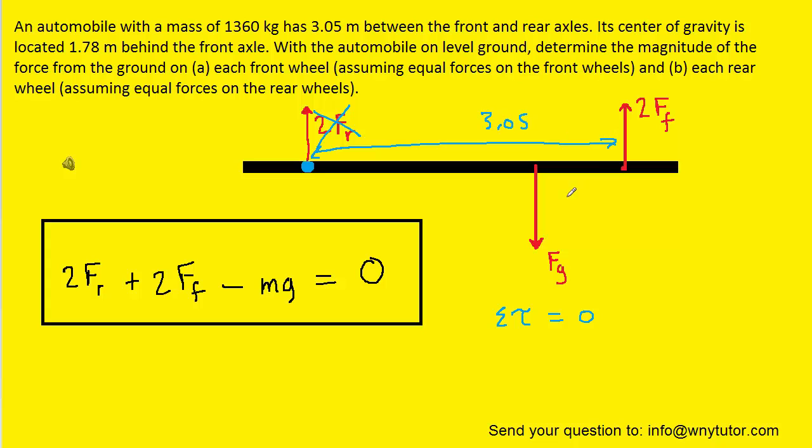And then we were told that the center of gravity is located 1.78 meters behind the front axle. So we'll have to subtract 3.05 minus 1.78 to get the distance from the pivot over to the gravitational force. And when we do that we get 1.27 meters. Now we're ready to plug into the torque equation.